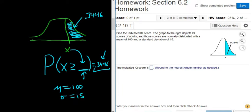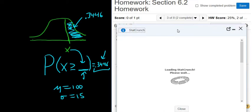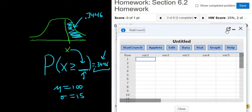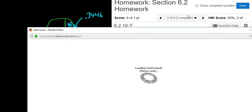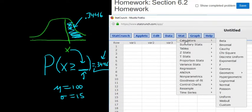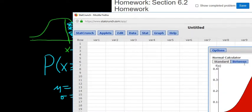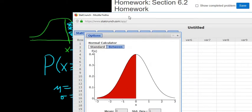OK, let's do it. So we go to Question Help and StatCrunch. All right. And then we go to Stat, Calculators, and then Normal. All right. And drag it over here so we can see it.